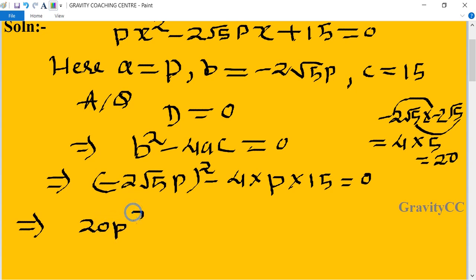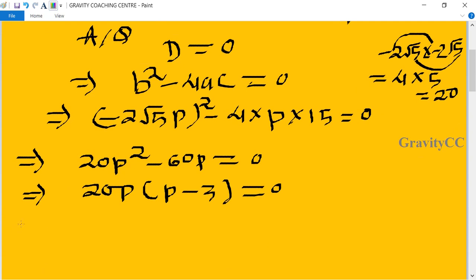Now take 20p as common, so 20p(p - 3) = 0. This implies that 20p = 0 or p - 3 = 0.